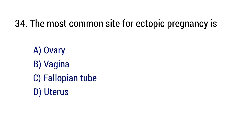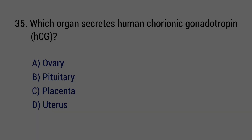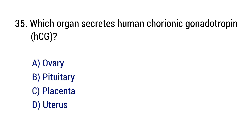Question number 34 and 35. The most common site for ectopic pregnancy is the fallopian tube. The hormone detected in pregnancy tests is human chorionic gonadotropin (HCG). The right answer is option C: Placenta.